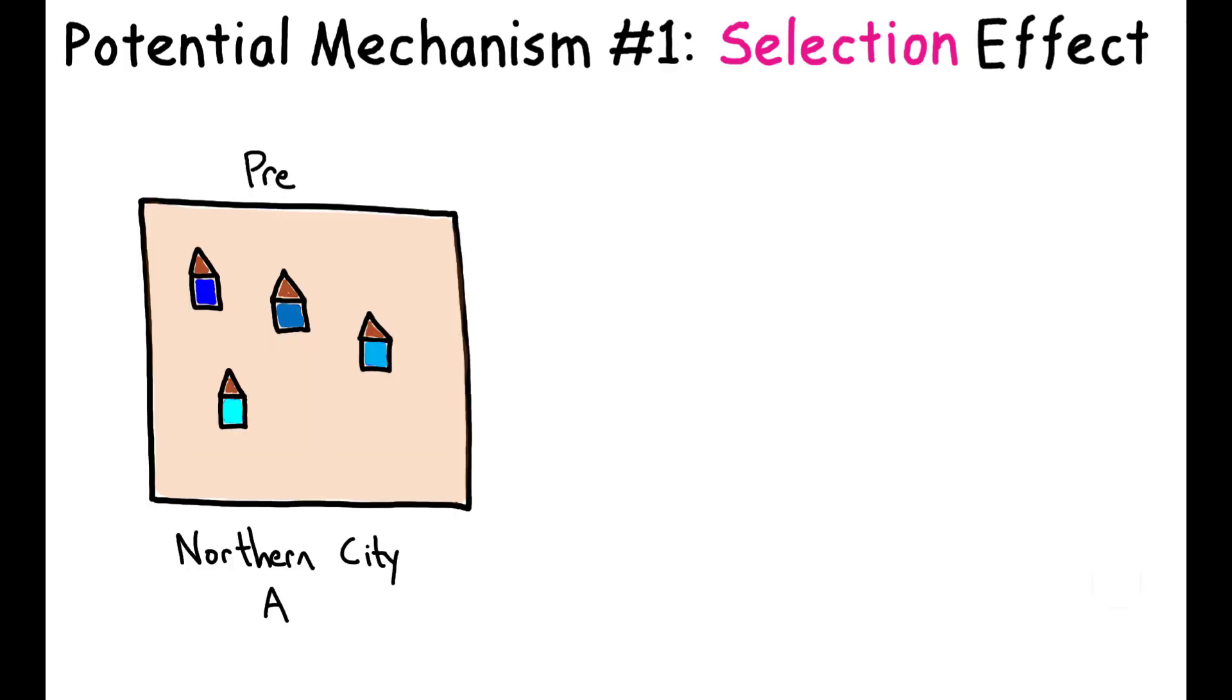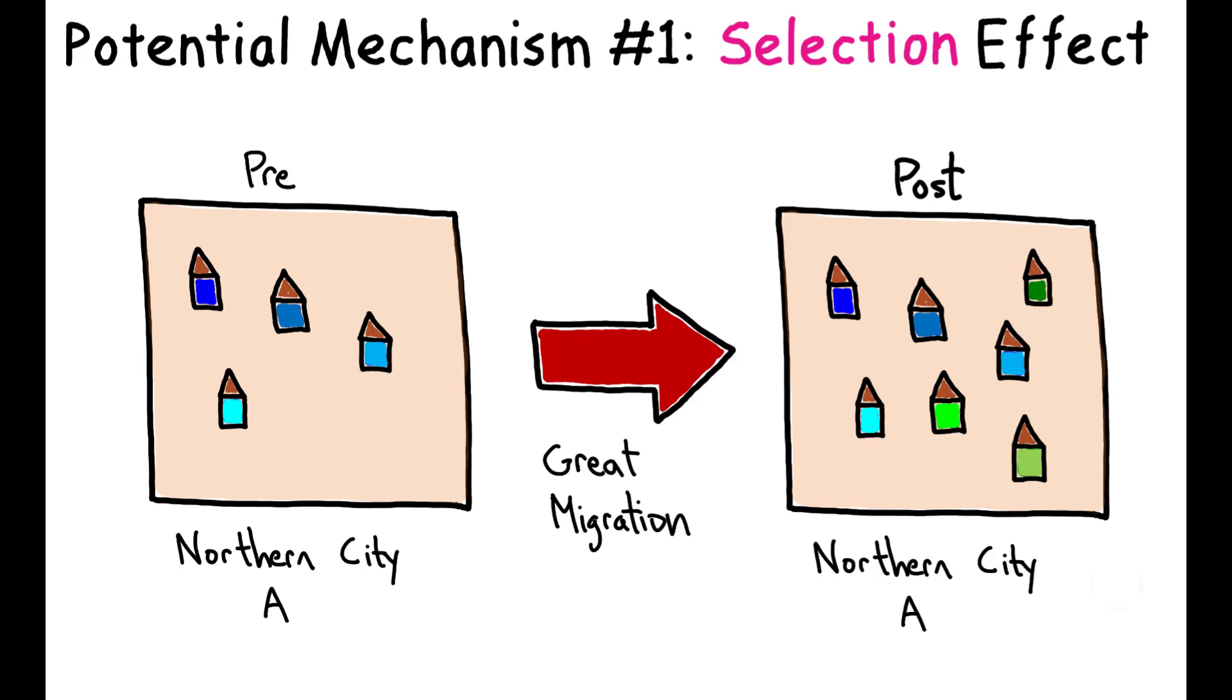Now, there are two potential mechanisms that could be at work. The first, called the selection effect, is that the large influx of migrants changed the composition of households living in these areas in ways that led to lower income mobility on average.